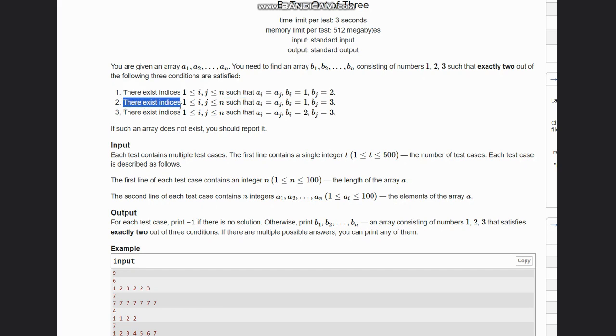And there exist indices i ≥ 1, j ≤ n with the same condition as above, ai = aj, but here bi = 1, bj = 3. Or there exist indices i, j such that ai = aj, here bi = 2, bj = 3.